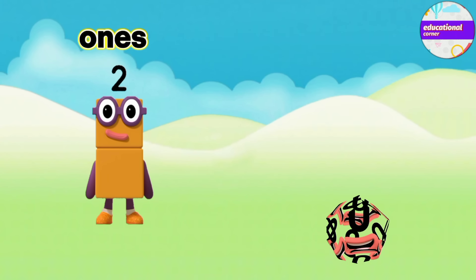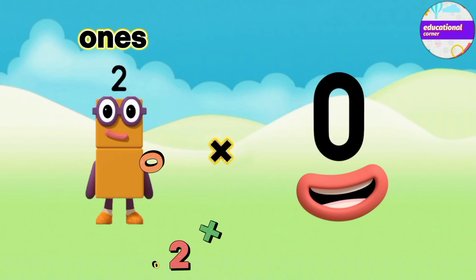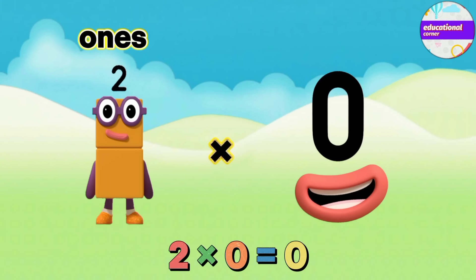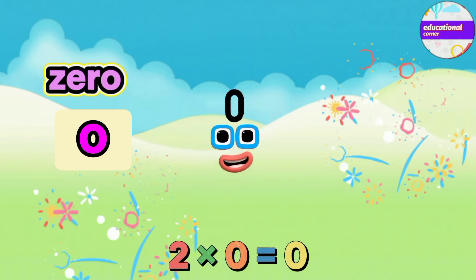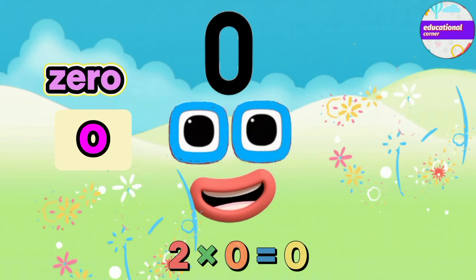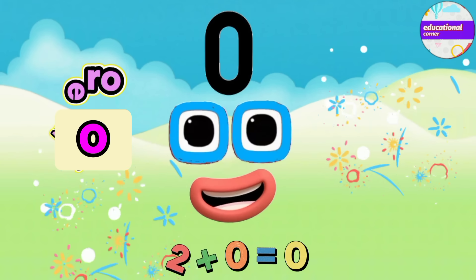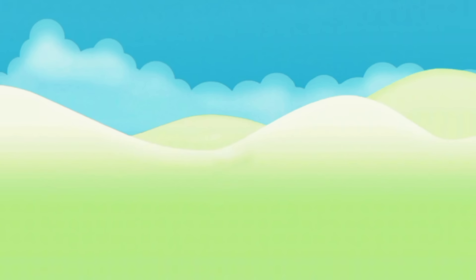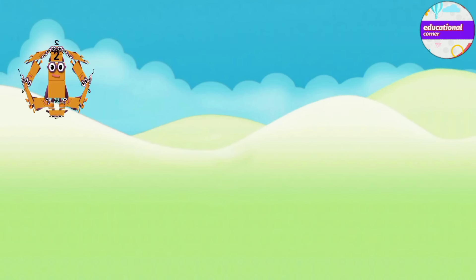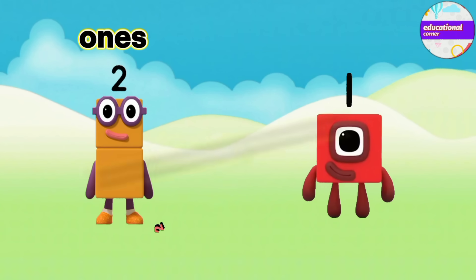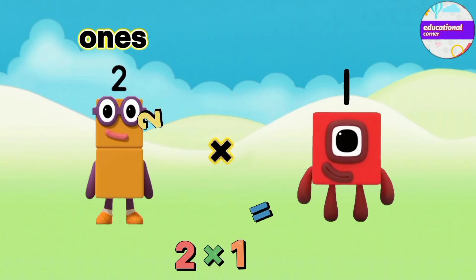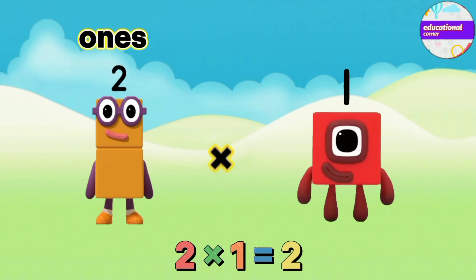2 multiply by 0 equals 0. 2 multiply by 1 equals 2.